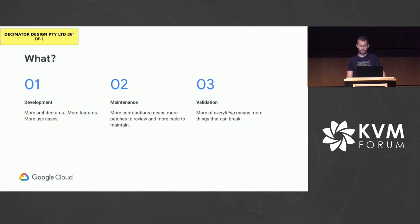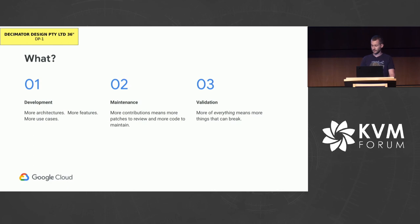From a development perspective, KVM needs to scale to support the increasing number of features being added, as well as an increasing number of use cases. All those new features and use cases means the number of contributions will also continue to increase, which means more patches to review and more code to maintain — and more things KVM can break in exciting new ways. Note: I specifically did not say developers and maintainers. We don't necessarily need to scale the number of developers; we can scale development if we make the developers we have more efficient. We can effectively scale maintenance by reducing the number of bugs introduced in the first place.